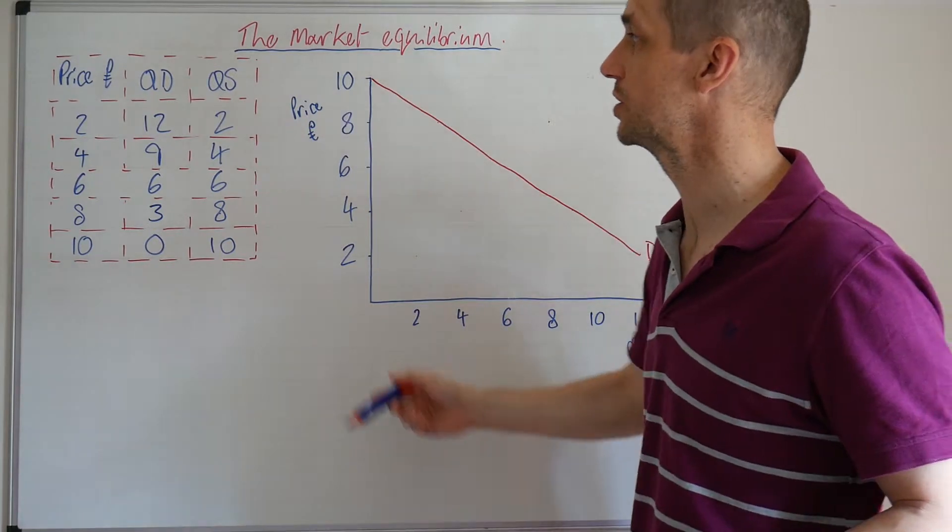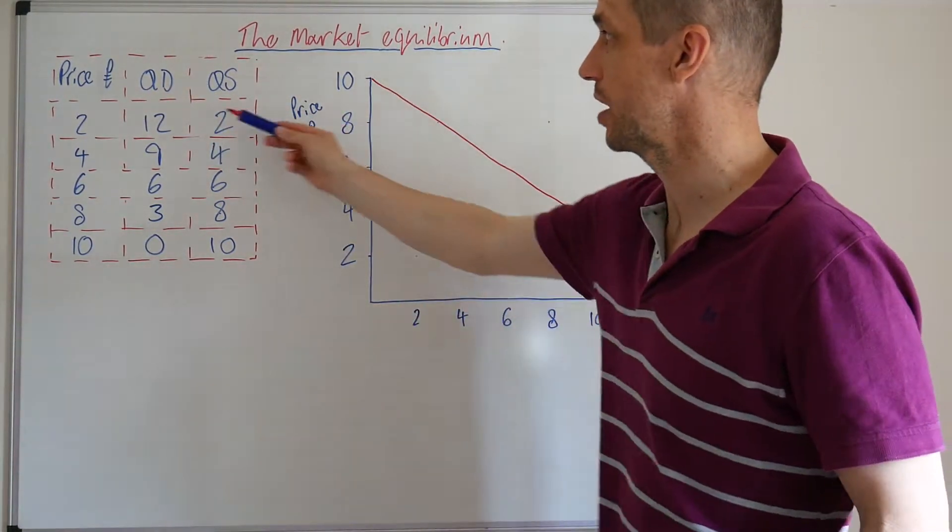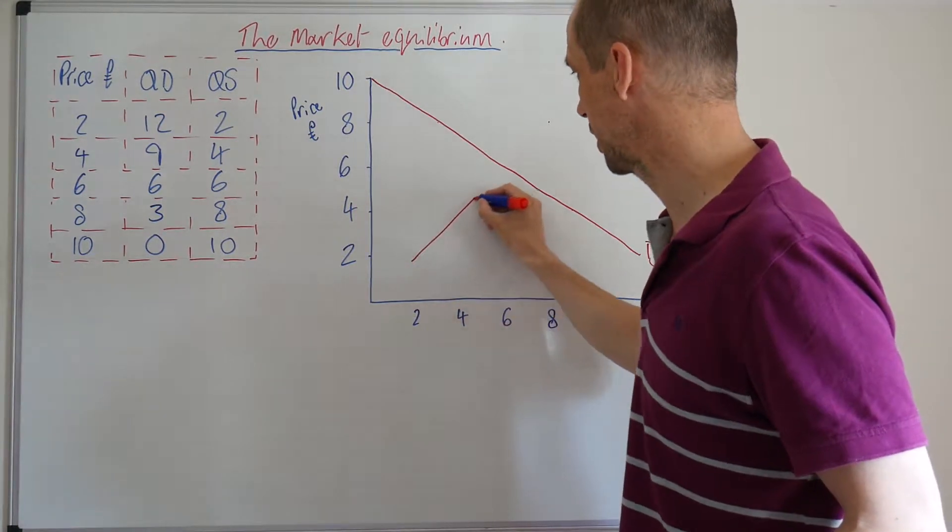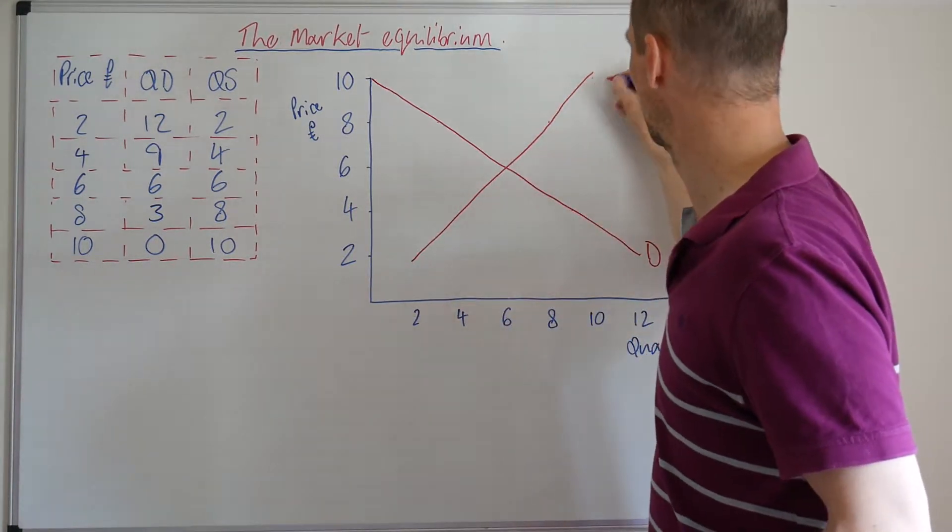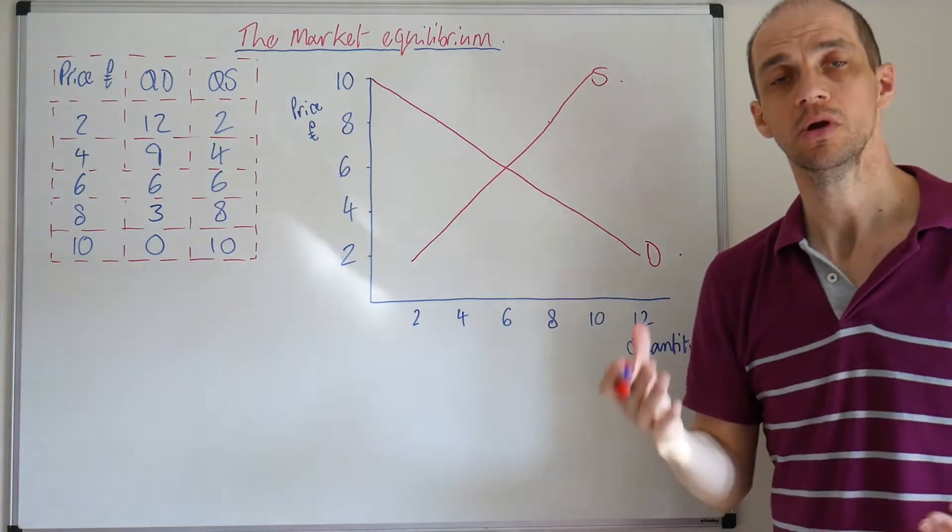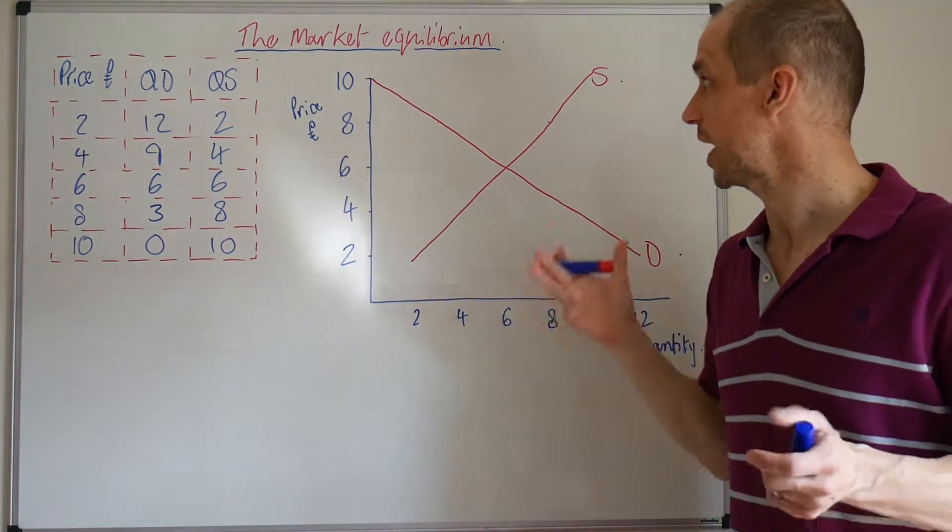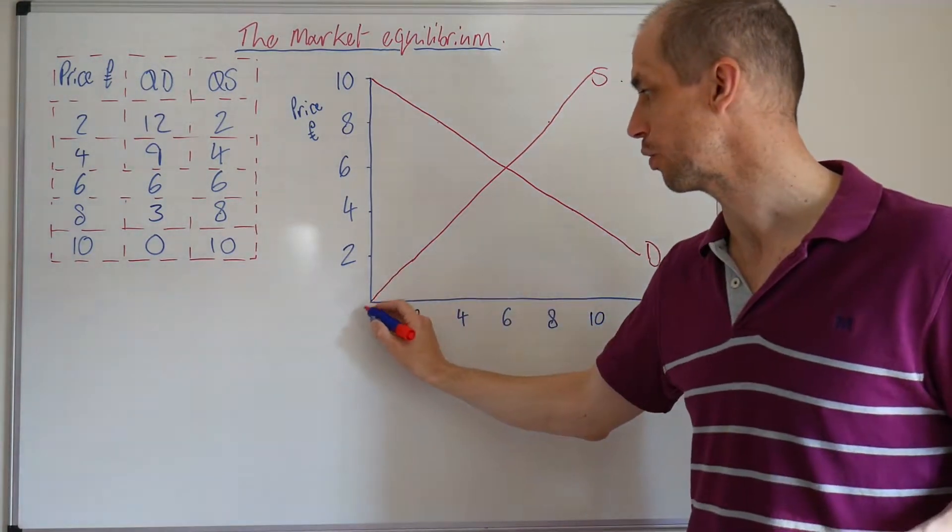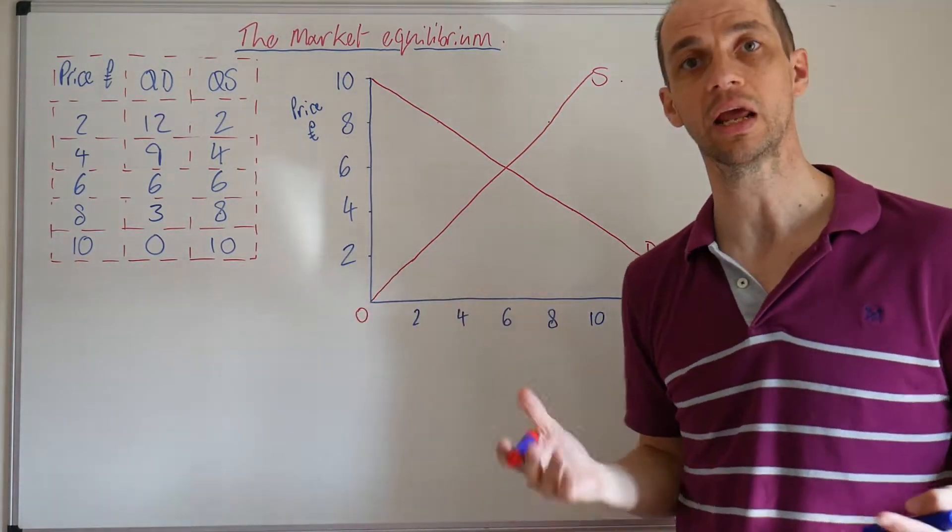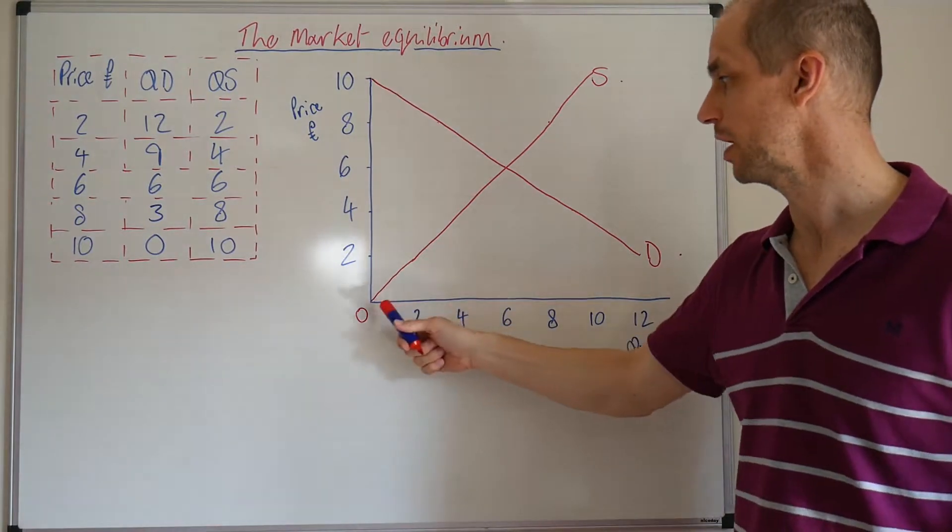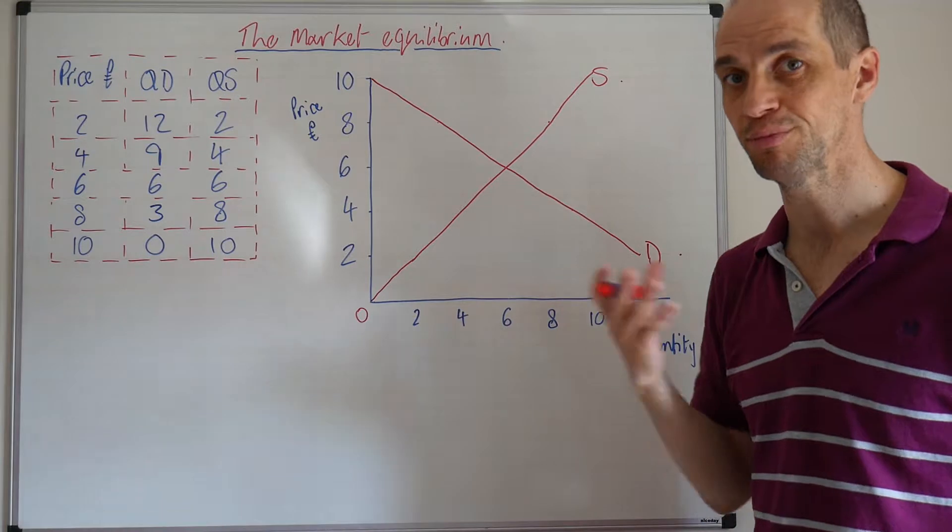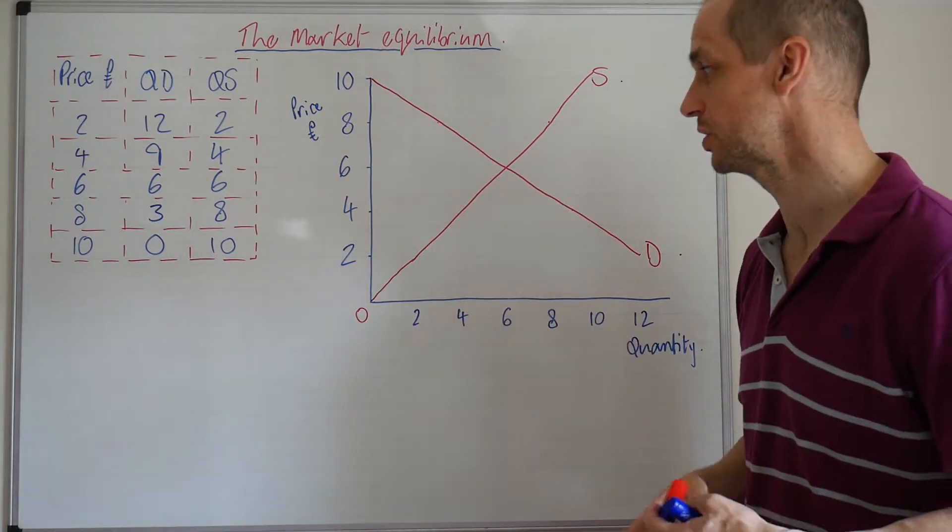Meanwhile, for the quantity supplied starting down here at two, we see that quantity supplied of two and then it increases like so. Good stuff. So that's a nice representation of demand and supply. If I continue this through, we could have our origin or zero point here. So if there was a price of zero, no firms are likely to be willing to actually provide this good to the marketplace.